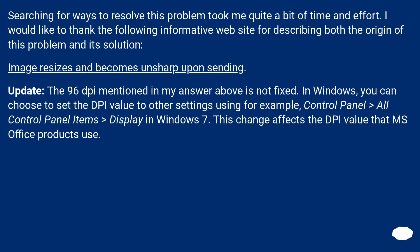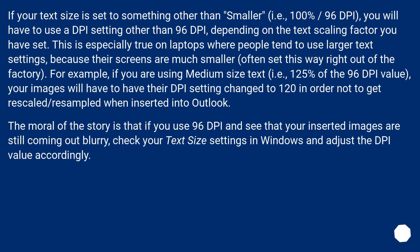Update: the 96 PPI mentioned above is not fixed. In Windows, you can choose to set the PPI value to other settings using, for example, Control Panel > All Control Panel Items > Display in Windows 7. This change affects the PPI value that MS Office products use. If your text size is set to something other than 'Smaller' — i.e., 100%, 96 PPI — you will have to use a PPI setting other than 96, depending on the text scaling factor you have set.